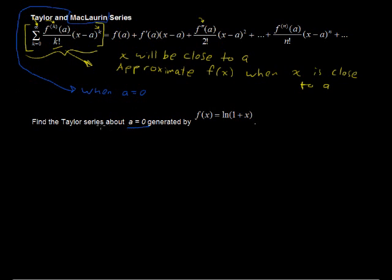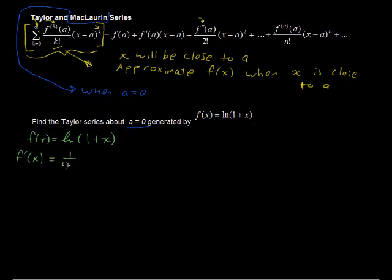We're going to find the Taylor series about a equals 0 generated by f of x equals the natural log of 1 plus x. So writing out the function: f of x is the natural log of 1 plus x. The first derivative is 1 over (1 plus x), multiplied by 1 from the chain rule — and the derivative of 1 plus x is just 1, so it stays simple.